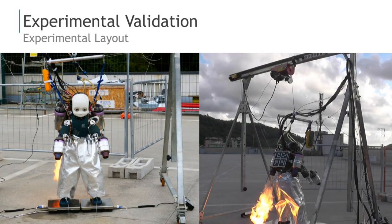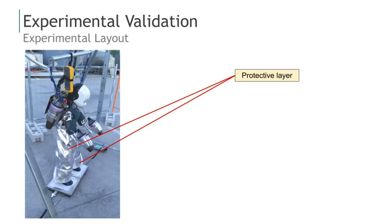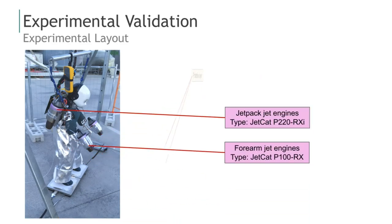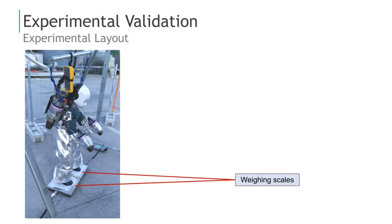We explain the experimental setup used to validate the proposed estimator. The setup consists of a heat-resistant material that protects the lower part of the robot from the heat generated by the jet's exhaust. We can also see the mounted forearm and backpack jet engines, along with the weighing scales used to measure the change of the robot's weight in response to the change of the jet's thrust intensities.